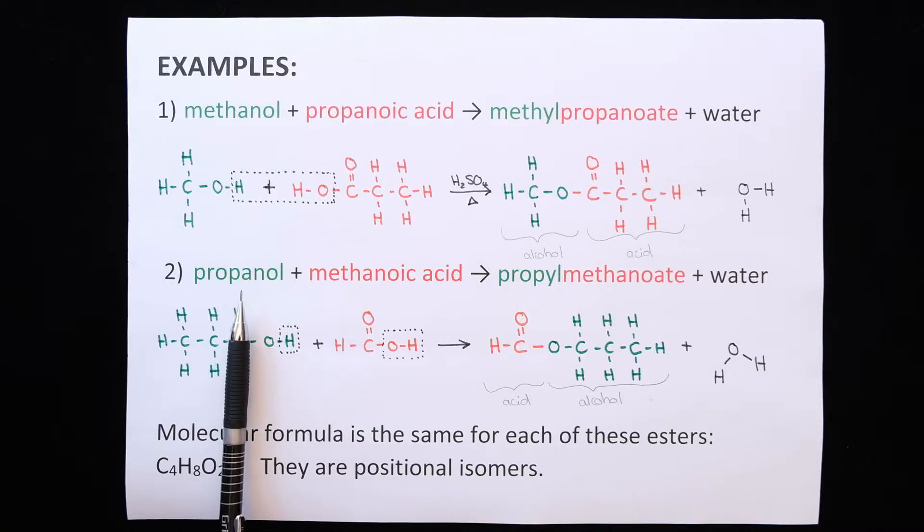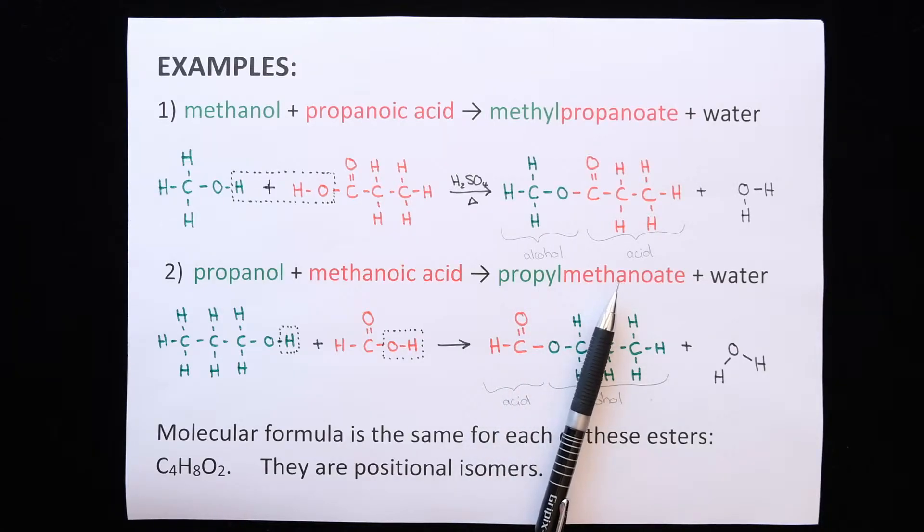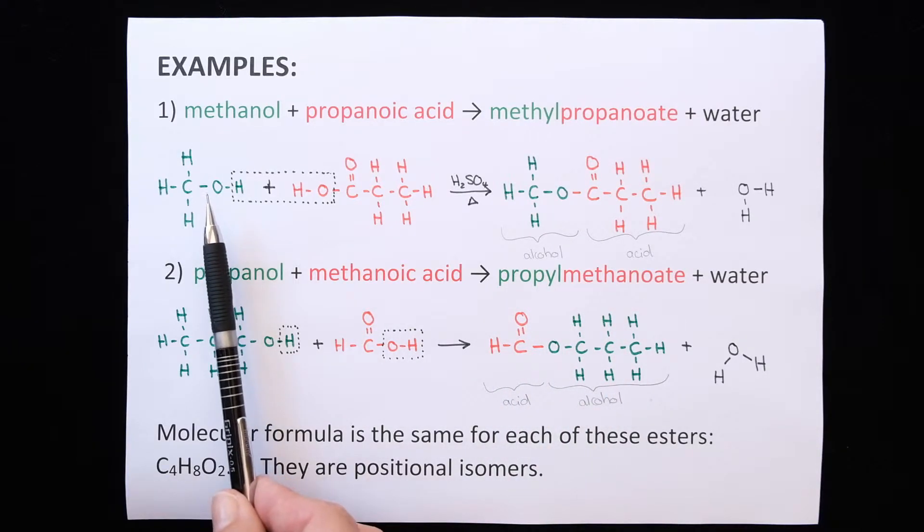If we look at the second example, propanol with methanoic acid will form propylmethanoate as your ester. Let's go through the synthesis.